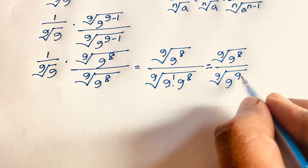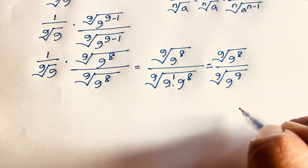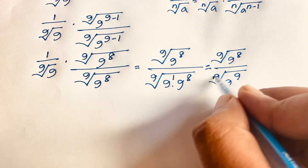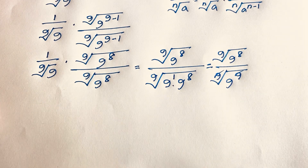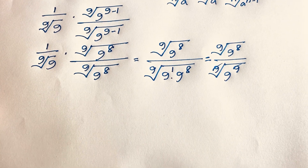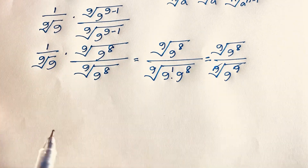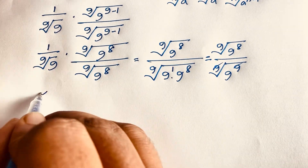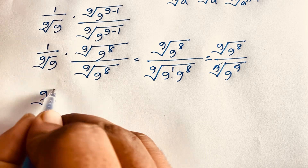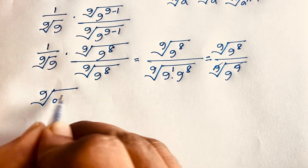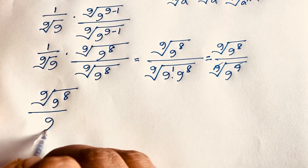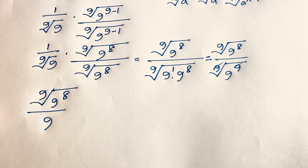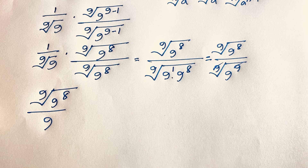Adding both exponent values: 1 plus 8 equals 9, so those cancel out. I can say easily this expression will be the 9th root of 9 to the power 8, over 9. That is a wonderful expression.